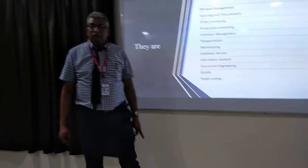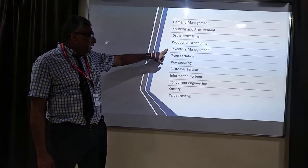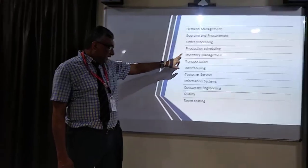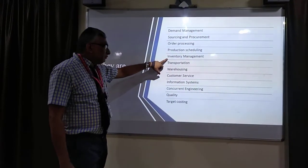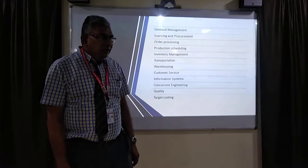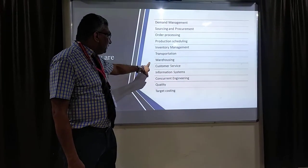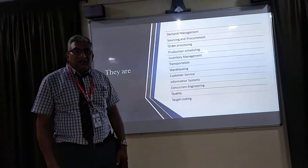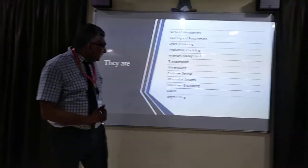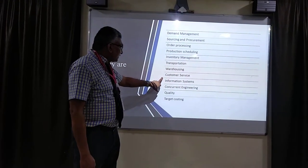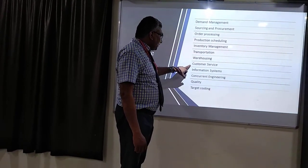In production scheduling, we have to schedule the entire production on the shop floor based on demand management. Then inventory management covers what materials are available in the factory and how we make orders and use these materials for production. Transportation is the movement of material within and outside the factory. Warehousing is where you store materials — both finished goods as well as incoming materials. Another important element is customer service — how you satisfy the customer based on their requirements.